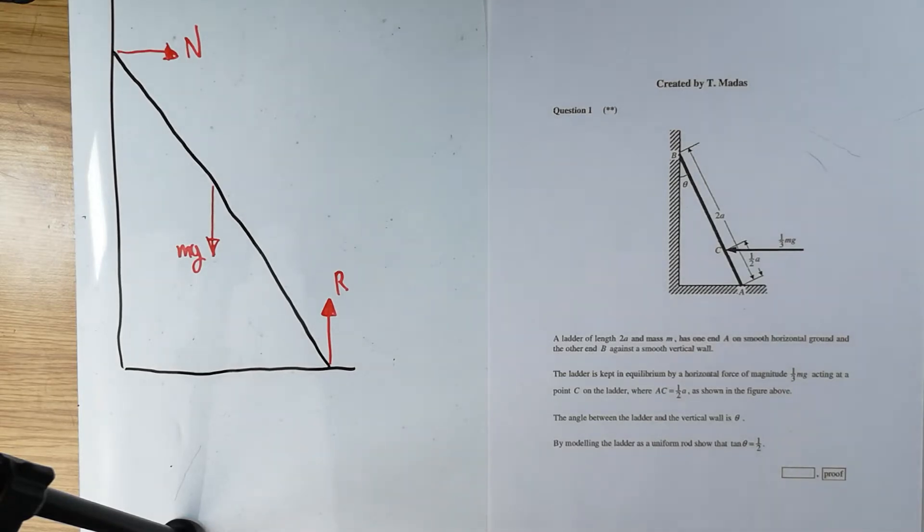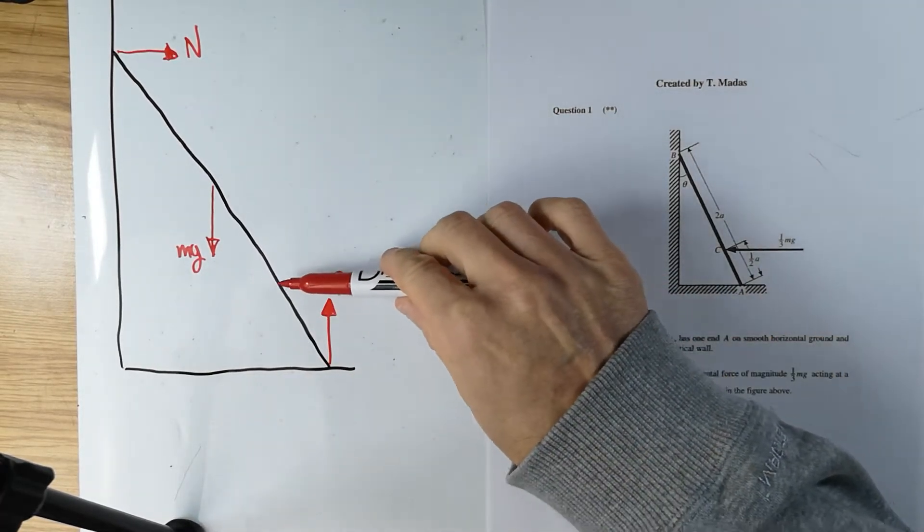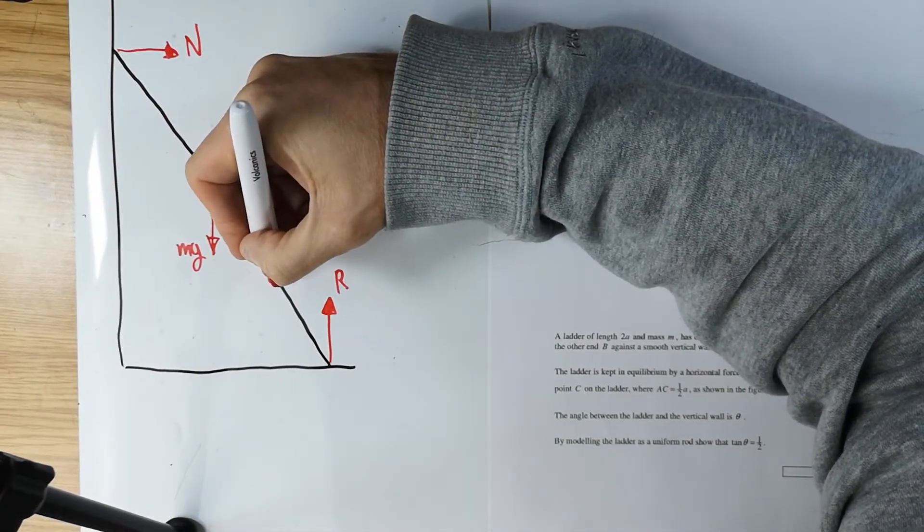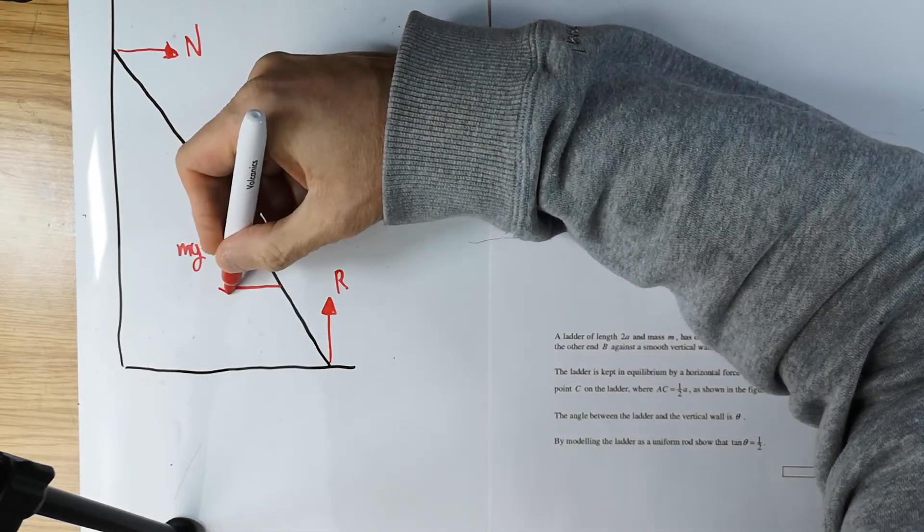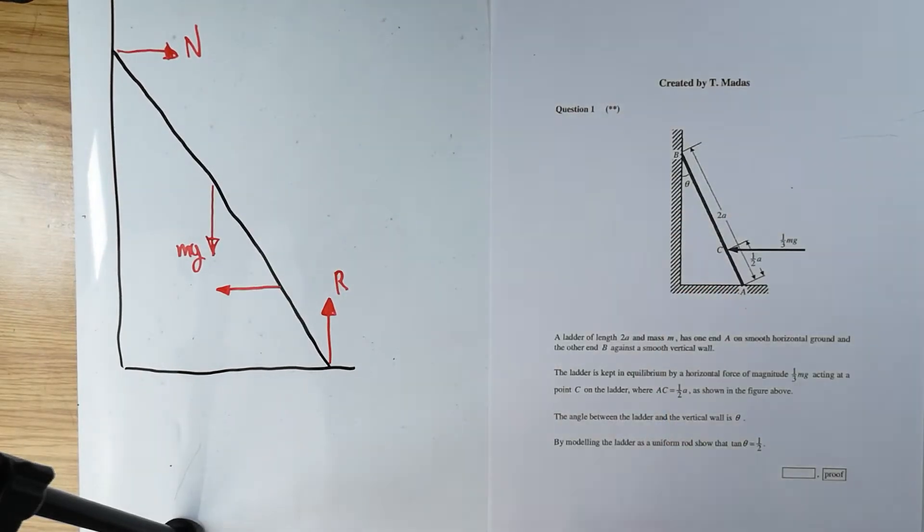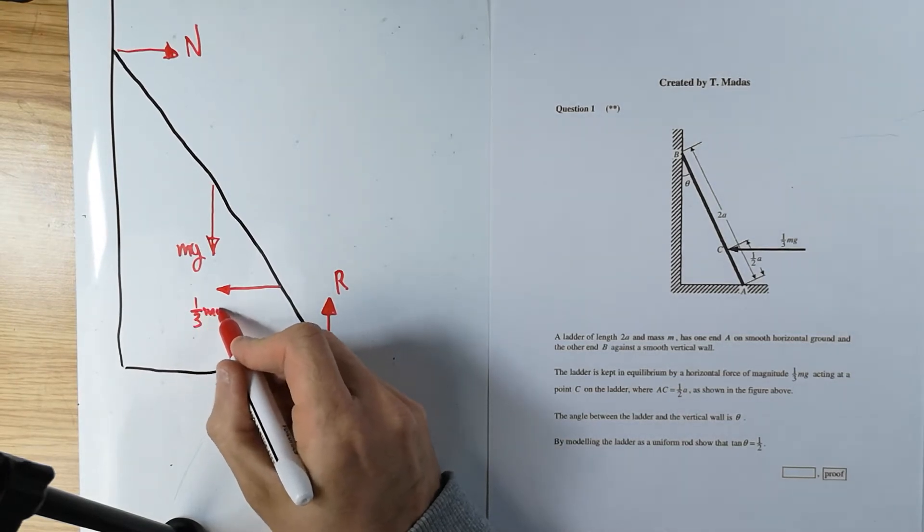Is there anything else, a man trying to climb up or anything like that? The ladder is kept in equilibrium by a horizontal force of magnitude one third mg acting at a point C on the ladder where the distance AC is half A as shown in the figure above. Again, I recorded the distances in my head. I'm going to mark them at the end. So what am I going to do now with this particular force? I do not like pushing forces.